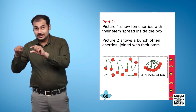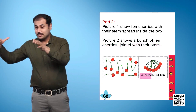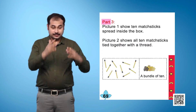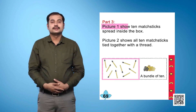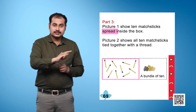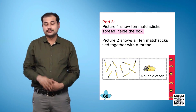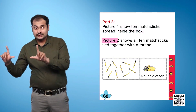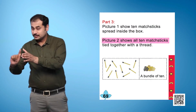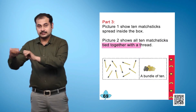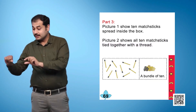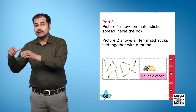Part 2 Text: A bundle of 10. Part 3, Picture 1 shows 10 matte sticks spread inside the box. Picture 2 shows all the 10 matte sticks tied together with a thread. Part 3 Text: A bundle of 10.